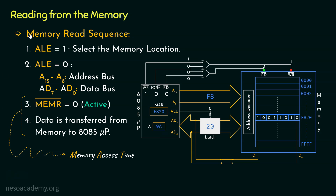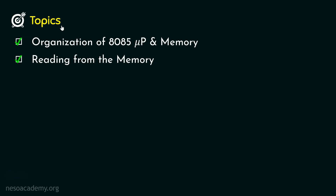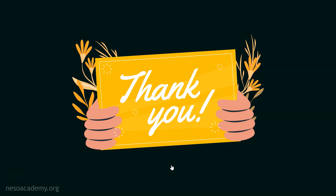This is the entire memory read sequence necessary for reading from memory. In this session, we covered two topics: first, we completed the entire organization of the 8085 microprocessor and the memory specifically for data transfer; thereafter we learned how reading from the memory takes place. In the next session, we are going to learn how to write to the memory — how the 8085 microprocessor is going to write data to a particular memory location.